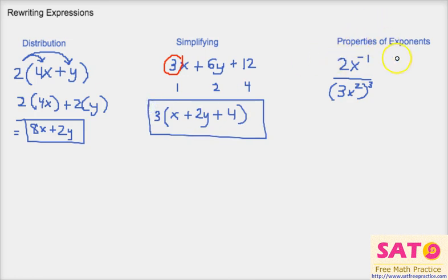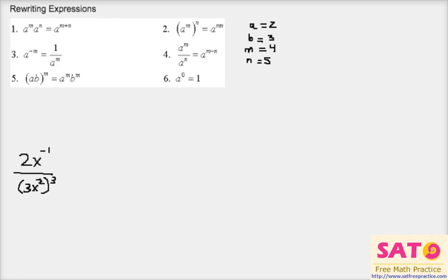And now our final thing for rewriting expressions is properties of exponents. There's a lot more we got to cover. But this is the problem we're going to solve. So here are all the basic properties. And I have the integers that we're going to use for these variables: a equals 2, b equals 3, m equals 4, and n equals 5.